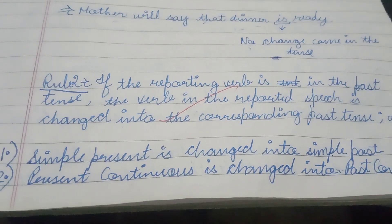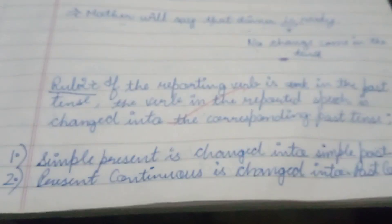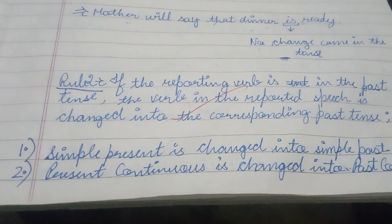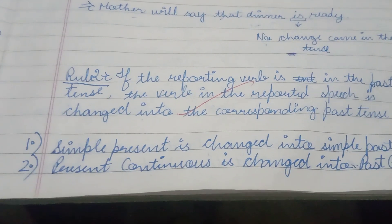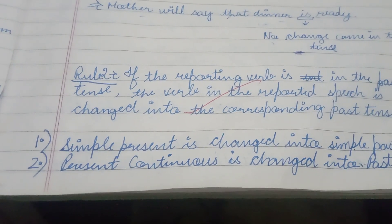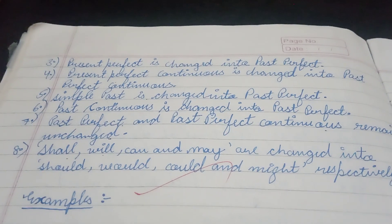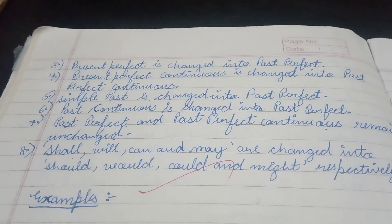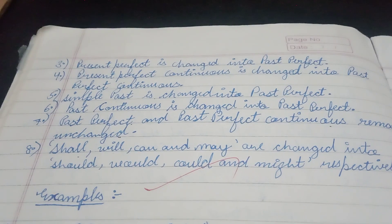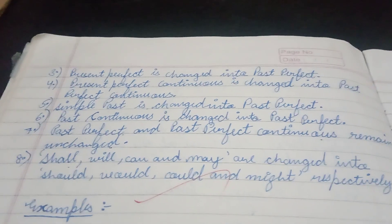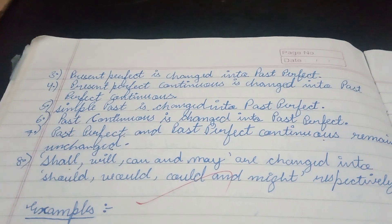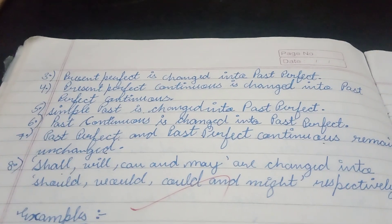Now, what is the corresponding past tense for each tense? Simple present is changed into simple past. Present continuous is changed into past continuous. Present perfect is changed into past perfect. Present perfect continuous is changed into past perfect continuous. Simple past is changed into past perfect, because past perfect is the corresponding past of simple past.